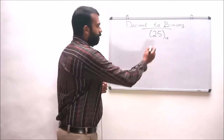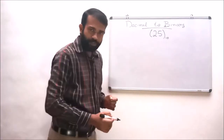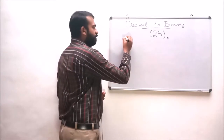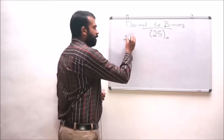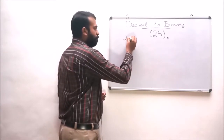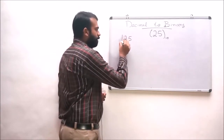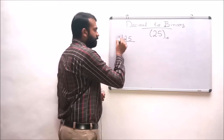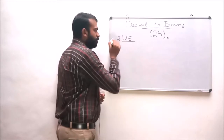Consider our example: the number is 25. If you are converting 25 into a binary number, we have to divide this number by 2.